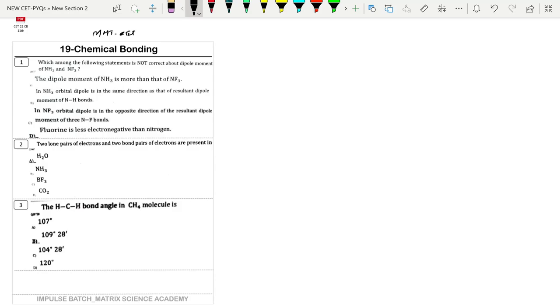Our first question is which of the following statement is not correct about dipole moment in NH3 and NF3. Directly in the last statement, as you know, fluorine is less electronegative than nitrogen. This is a well-known statement that fluorine is highly electronegative, which means that the last statement is wrong.